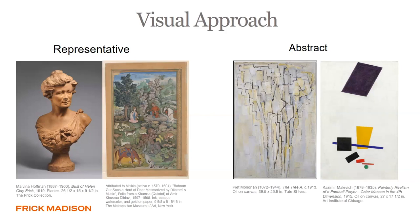Similarly, if we look at the image to the right attributed to Miss Frick, we see a landscape that doesn't necessarily have a realistic progression of space. But we can read it as such from the picture plane's bottom to the top. We also see that the scale of the figures doesn't really change, but we can still understand the narrative that is being presented here.